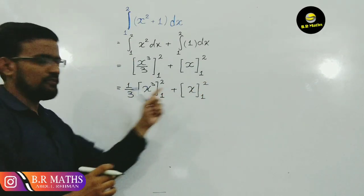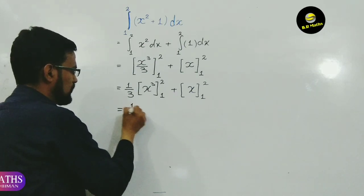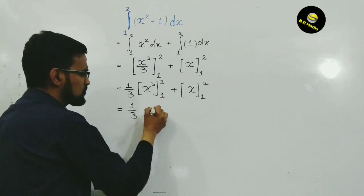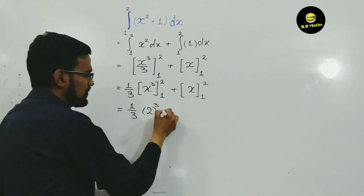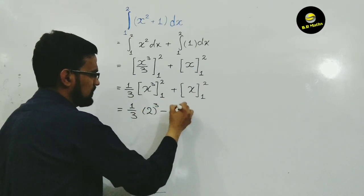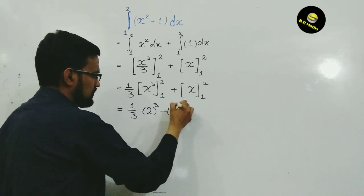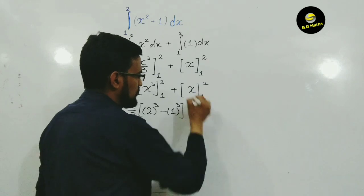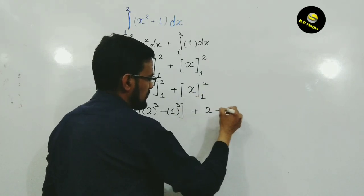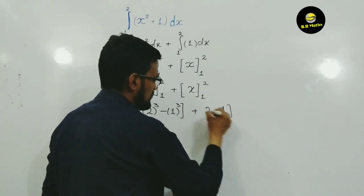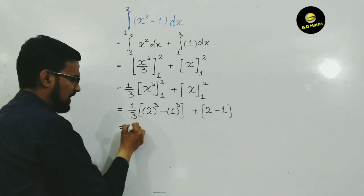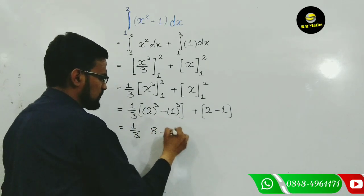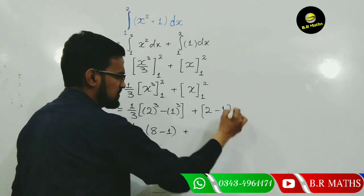1 over 3 x raised to power cube - cube means 2 raised to power cube minus 1 cube. And similarly here plus 2 minus 1. And 1 over 3, 2 cube is 8 minus 1, plus 2 minus 1.